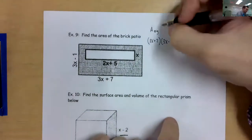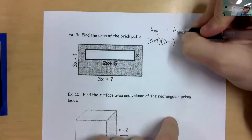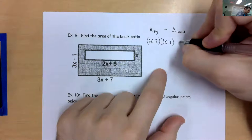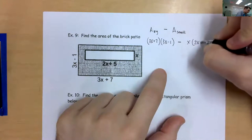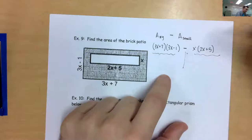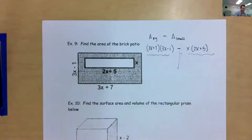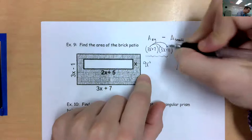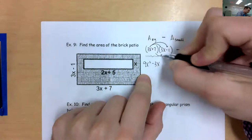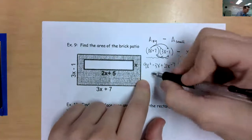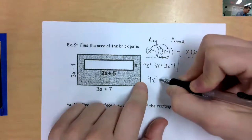I would find the area of the big rectangle — the entire patio — by doing length times width: (3x + 7) times (3x − 1). Then I would subtract the area of the small rectangle, the fire pit: x times (2x + 5). So I almost have two questions — multiply those, multiply these, then subtract. Let's do one at a time. Multiplying the first: 3x times 3x is 9x squared. 3x times negative 1 is negative 3x. 7 times 3x is 21x. And 7 times negative 1 is negative 7.